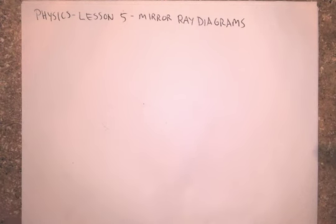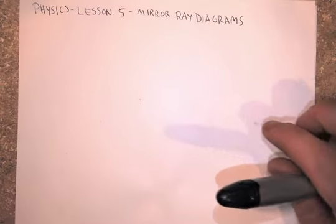All right, lesson five is ray diagrams with mirrors. We're going to look at concave and convex mirrors and how to draw the diagrams of where the image will form for these mirrors.